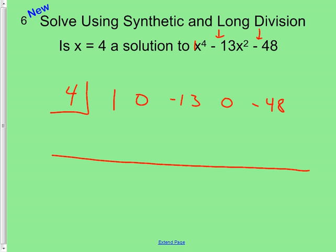How many have set it up right? Good. Moving on. Drop it like it's 1 times 4 is 4. Add them 4. Multiply them 16. Add them 3. Multiply them 12. Add them 12. Multiply them 48. Add them 0. It worked. Yay.